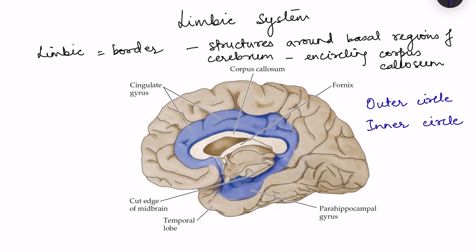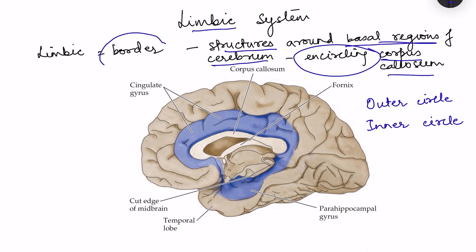The limbic system consists of structures located around the basal regions of the cerebrum, which encircle the corpus callosum. Since they are basically forming a border of the corpus callosum, their name is limbic system — because the word 'limbic' itself means border.